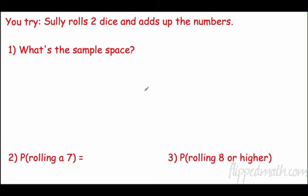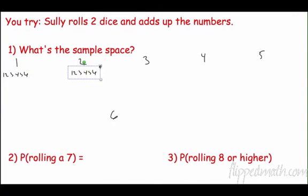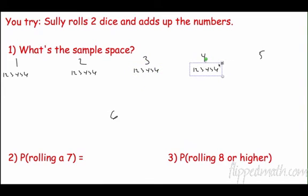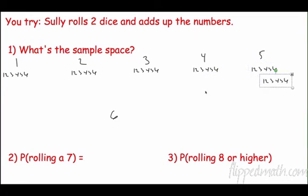Now let's try rolling two dice and adding the numbers. Using a tree diagram, the first die can show one through six, and for each outcome the second die can also show one through six — giving us 36 total possible outcomes.